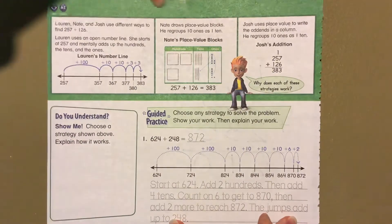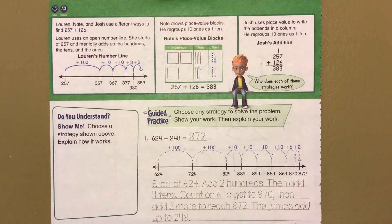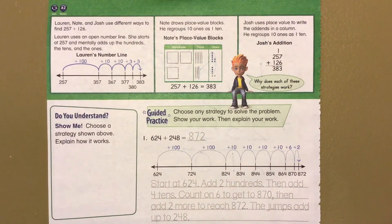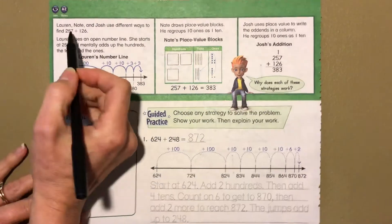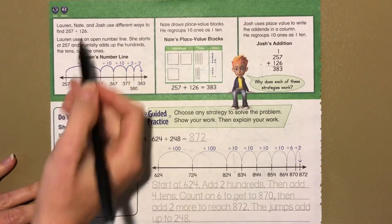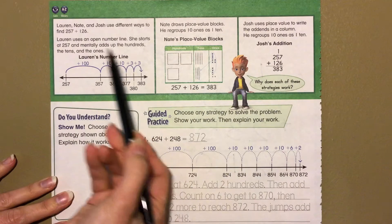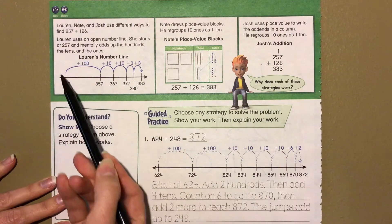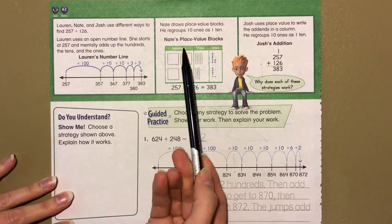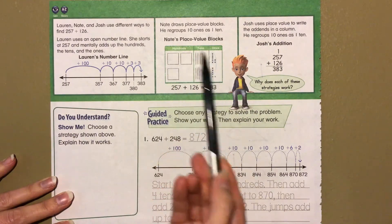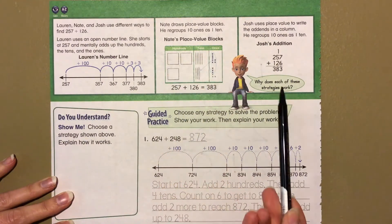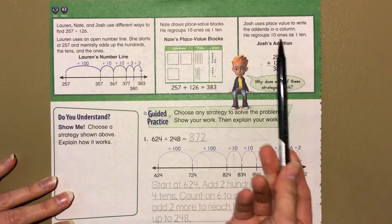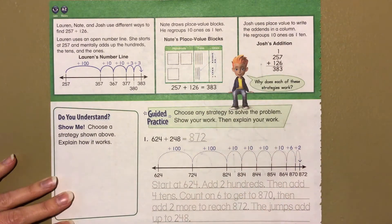Let's go to the back page and look at the comic across the top. Lauren, Nate, and Josh use different ways to find 257 plus 126. One strategy uses the open number line with mental math hops. Another draws place value blocks. The third adds in columns, like I did on the front page.